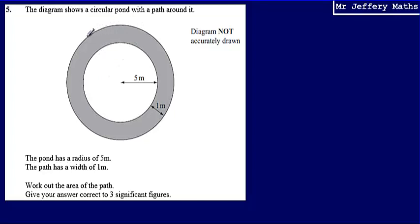So if I were to work out the area of the larger circle, then from that area, take away the area of the smaller circle. That would tell me what the area of just that shaded part is.